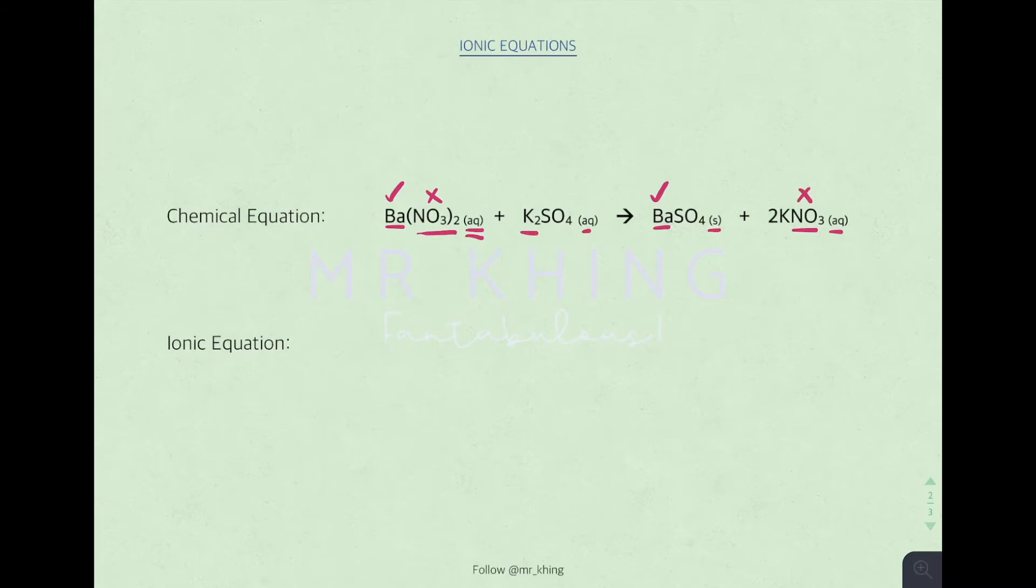Potassium aqueous, potassium aqueous. Remain the same. Sulfate aqueous, sulfate solid. Changes of state symbol, so therefore we include sulfate in our ionic equation.